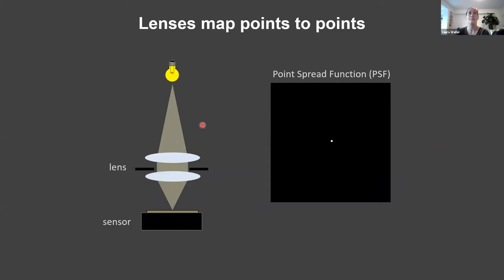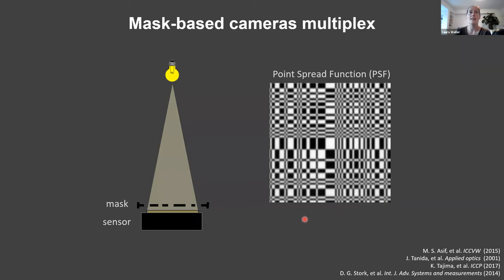A normal camera has a lens that maps a point source in the scene to a point on the sensor. Ideally it creates a point; because of diffraction it actually creates a vessel-function-like thing. The intensity measured at the sensor given a point in the scene is called the point spread function — basically the impulse response of the system. Previous lensless cameras mostly use amplitude masks, putting weird patterned masks in, so their point spread function will be these weird patterns they've designed.